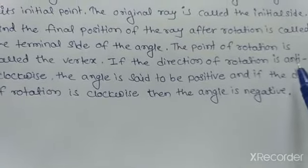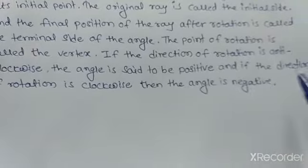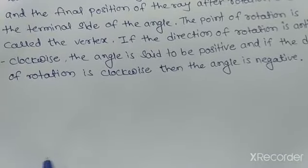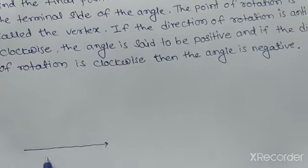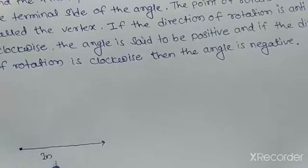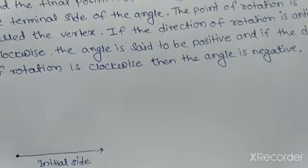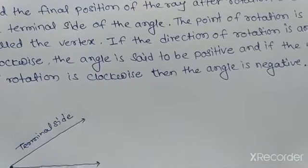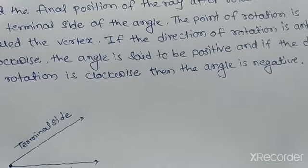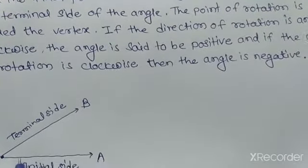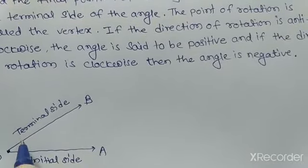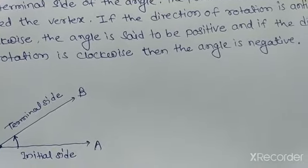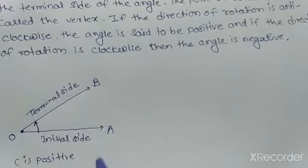If the direction of rotation is anticlockwise, the angle is said to be positive. If the direction of rotation is clockwise, the angle is said to be negative. So if we consider this as the initial side, with vertex O, and this as the terminal side — here the angle is in anticlockwise direction, so it is a positive angle.